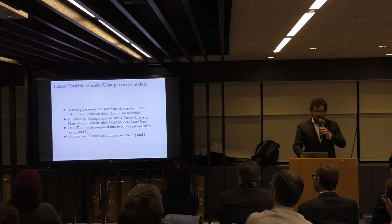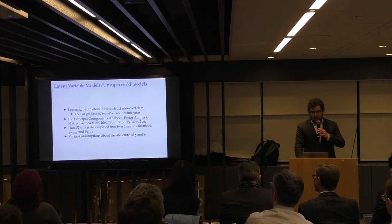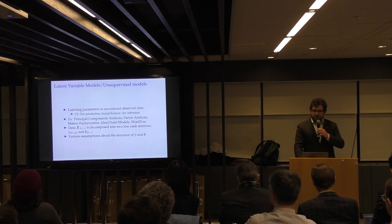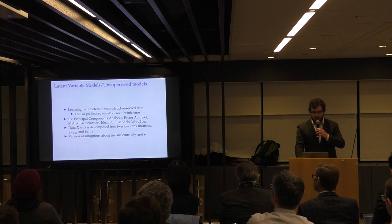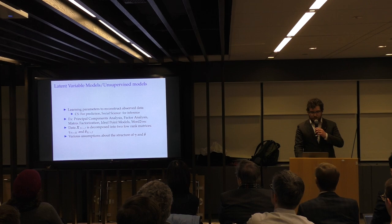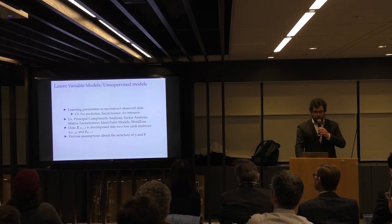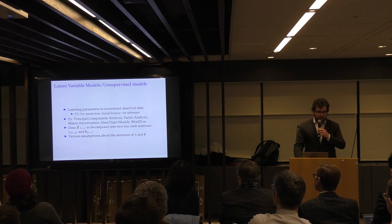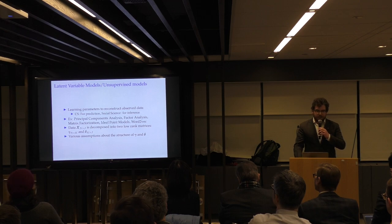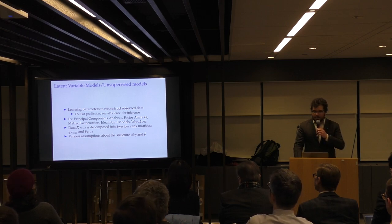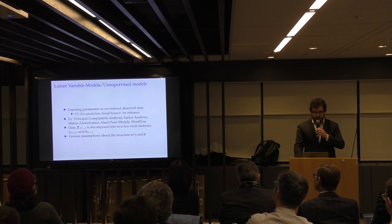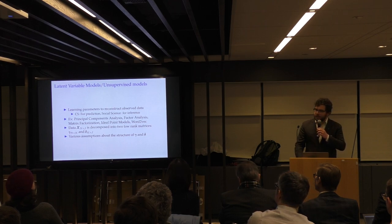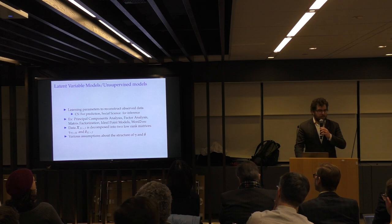And one set of models that I think can also fit in this framework that I'm going to extend tonight are latent variable models or unsupervised models, where the idea is you're learning parameters to reconstruct your observed data. If you're coming out of computer science, you're probably doing this for prediction. If you're a social scientist, you're doing this for inference. So you've probably encountered these models in some form or another, principal components analysis, factor analysis, other matrix factorization models, ideal point models. If you ever read 538 and see DW nominate, that's an ideal point model, or word2vec for word embeddings. And the basic idea behind all of these models is you have some data matrix X with N rows and J columns. And it'll be decomposed into two low rank matrices. And I'll call these gamma, which is N rows by K columns, and delta, which is K rows by J columns. And then depending on the assumptions you'll make about the structure of gamma and delta, you can get a variety of different models.